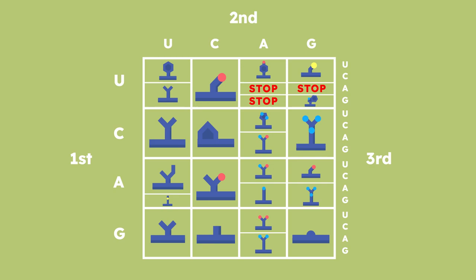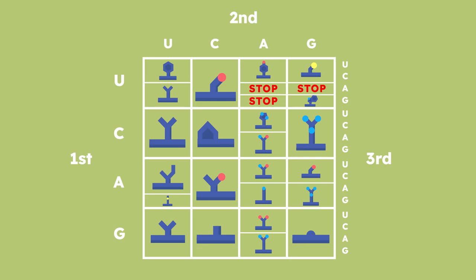when UGA was proven to be a stop codon. That gives us a total of 20 different amino acids. This is what makes those 20 standard.